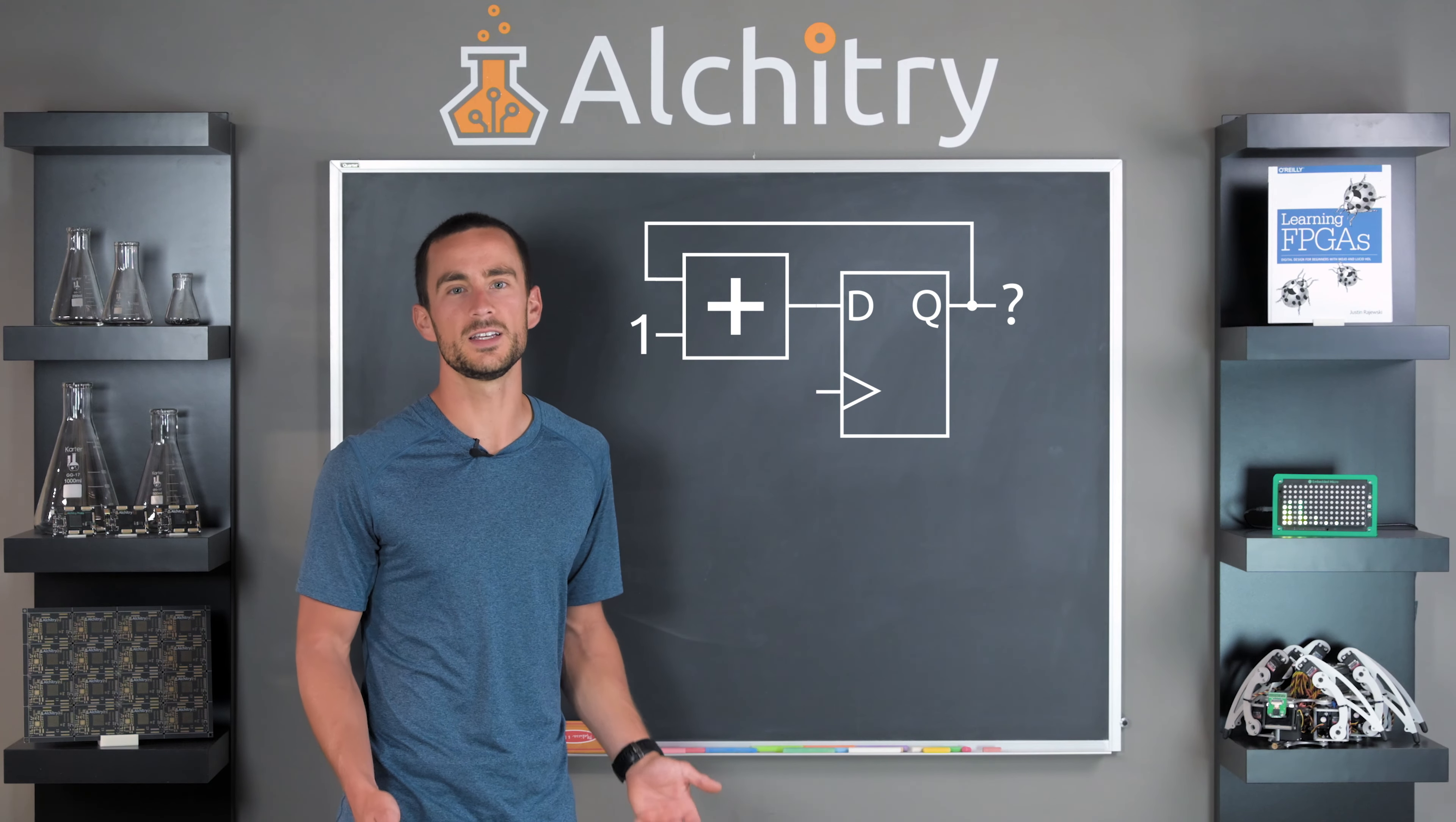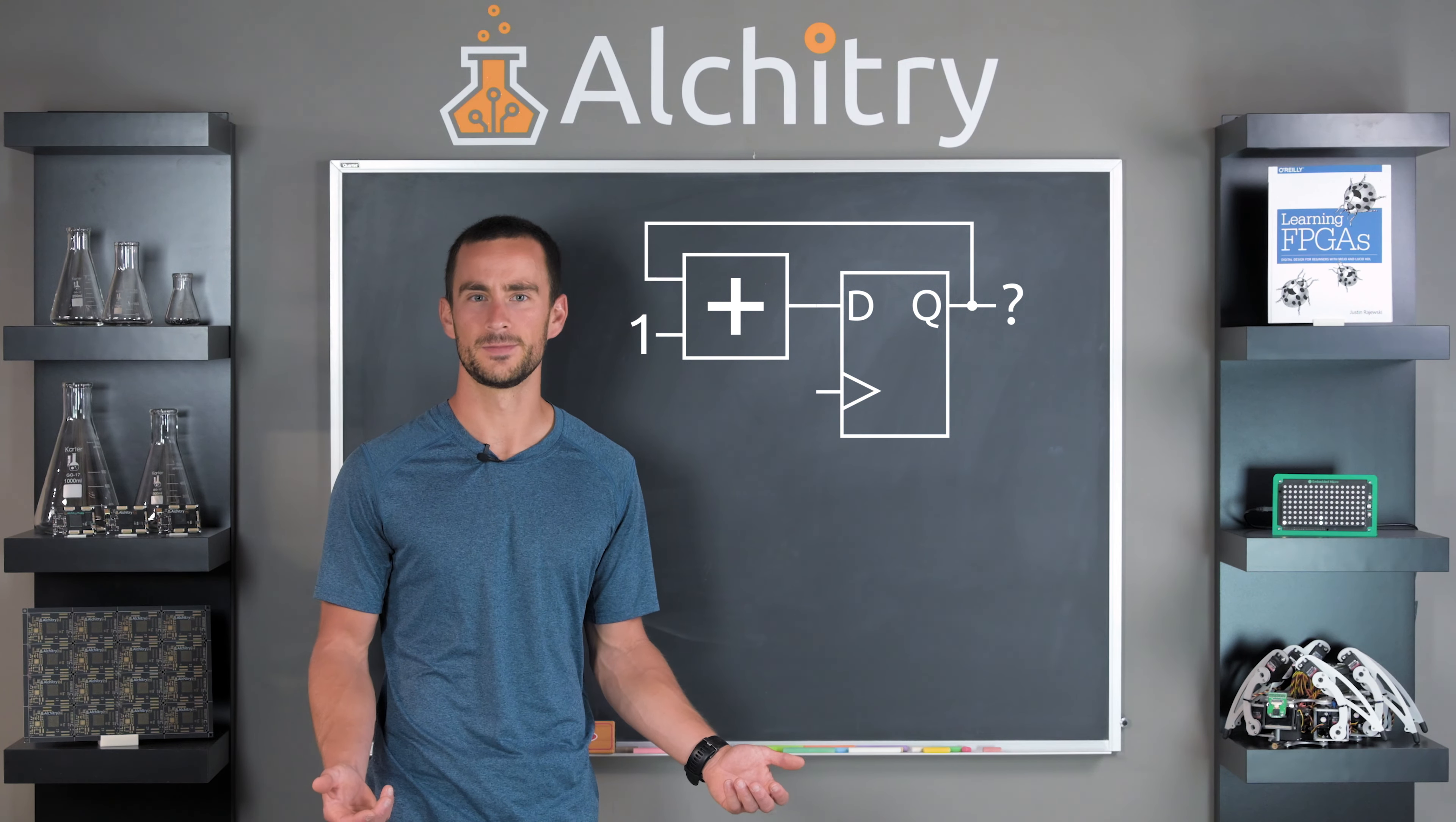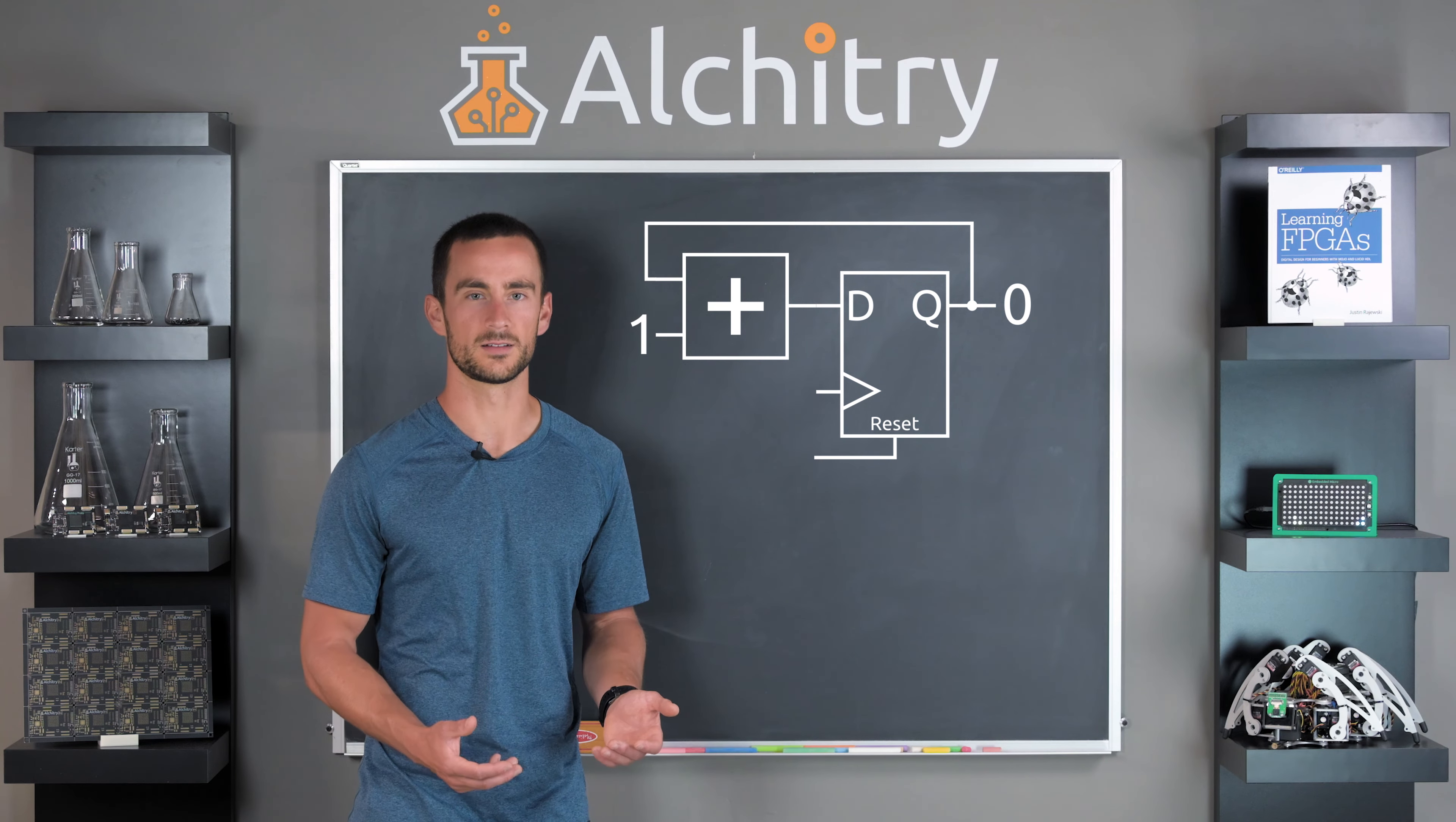There is one thing we haven't covered. What is the initial value of the counter? Well, that's easy. It's whatever the initial value of the DFF is. But what value is that? Due to the nature of DFFs, when power is applied, they will randomly settle into a 0 or 1. This means our counter initial value is random, which isn't very useful. To fix this issue, DFFs have another input, reset. This input can be used to force it to a 0 or a 1. If it's used to force it to a 1, this input is sometimes referred to as set instead of reset. After a circuit is powered on, it's typical to reset everything into a known state.